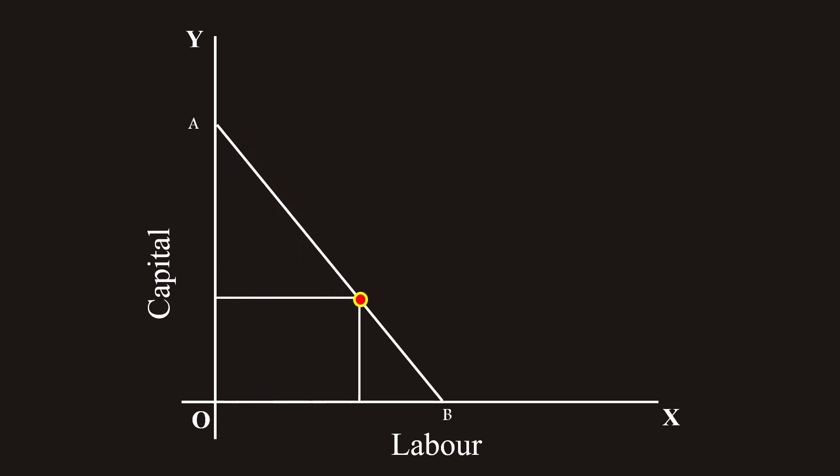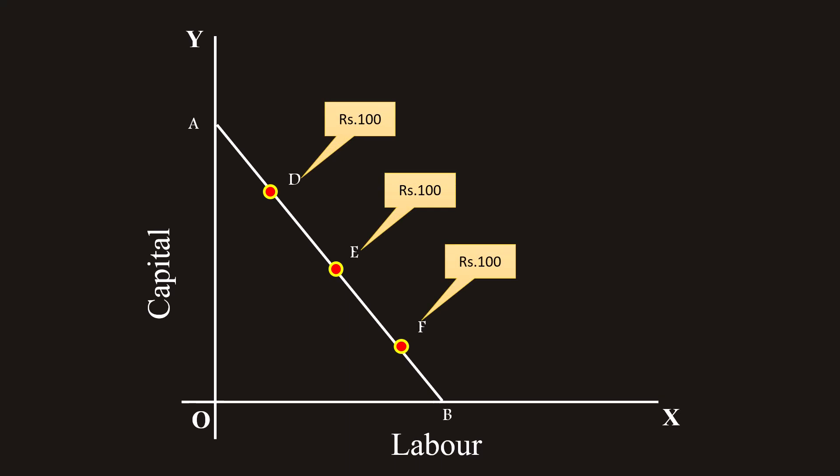A producer can buy any combination with the same outlay or incurring the same cost. For example, D, E and F are a few combinations on the isocost curve. If the cost of combination D is 100 rupees, the cost of E and F are the same.